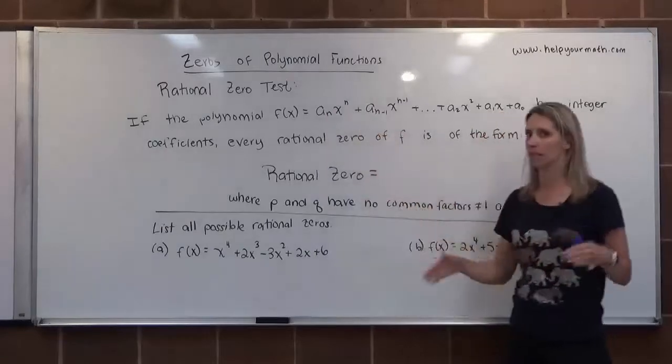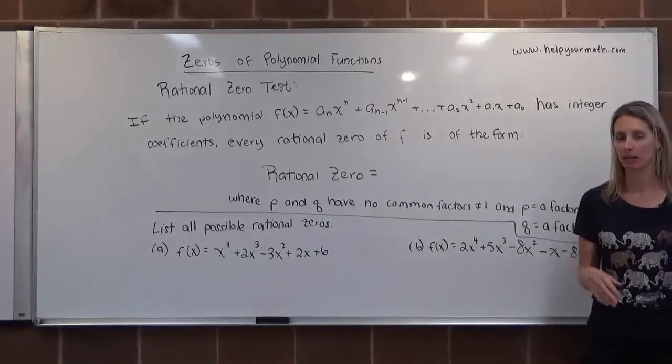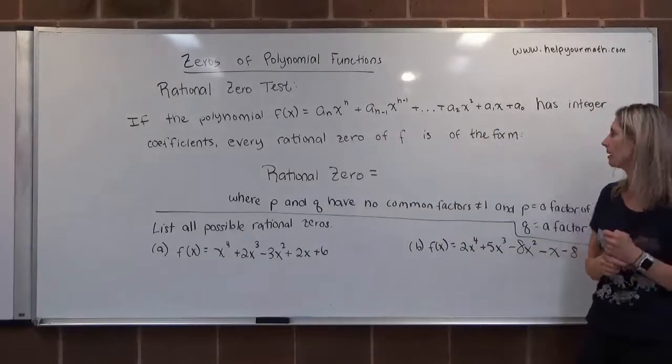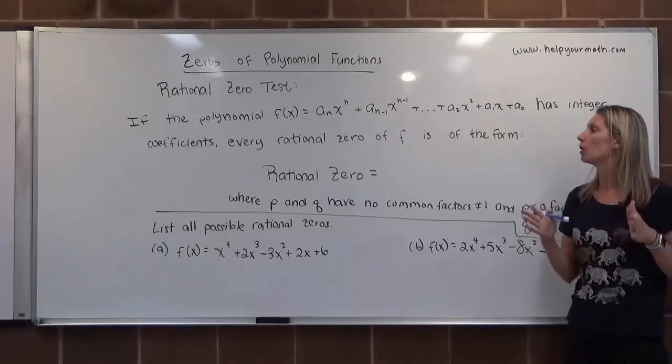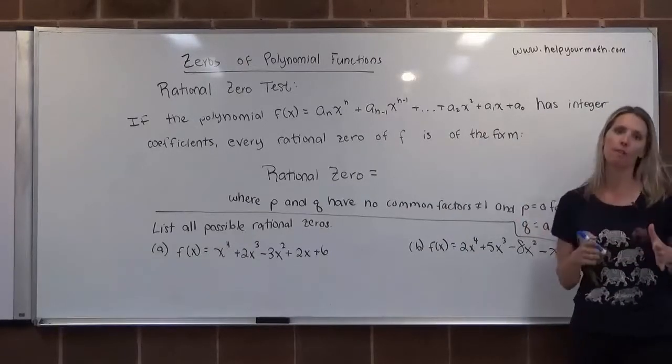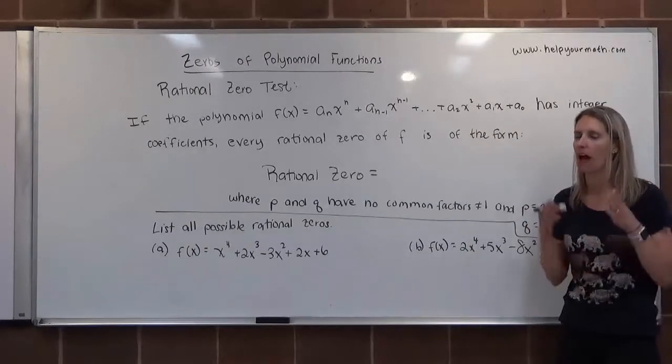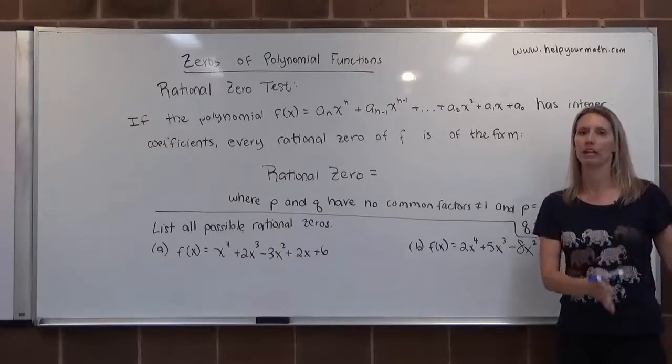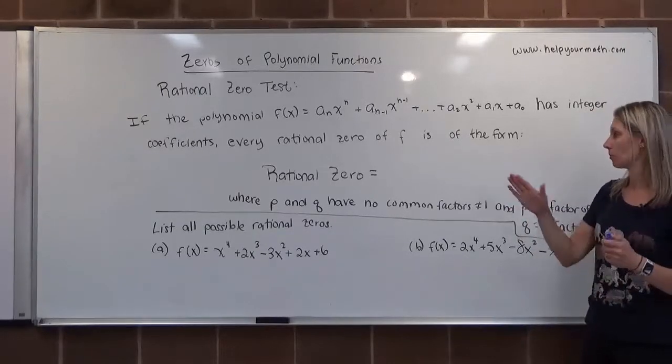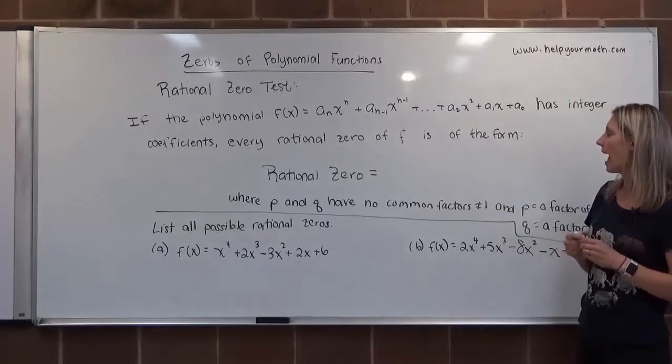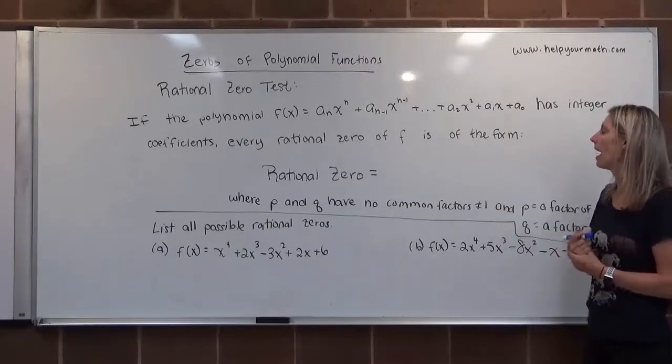...meaning that all of the A subs, A sub N, A sub N minus 1, A sub N minus 2, A sub 2, A sub 1, A sub 0, those should all be integer coefficients. So that's 0, 1, 2, 3, 4, 5, and the negatives of those, negative 1, negative 2, negative 3. So coefficients should be integers. Then every rational 0 of F...